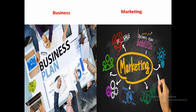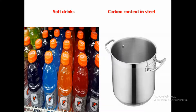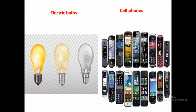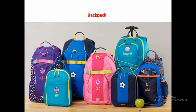Statistical Quality Control is a term used to describe the set of statistical tools used by quality professionals. Consumers may feel that manufactured articles may not be in accordance with quality standards. For example, no two bottles of soft drinks are filled to the same level, carbon content in steel differs from unit to unit, electric bulbs belonging to the same lot have different burning hours, a cell phone does not function as it is actually designed, or a new backpack with a broken zipper.